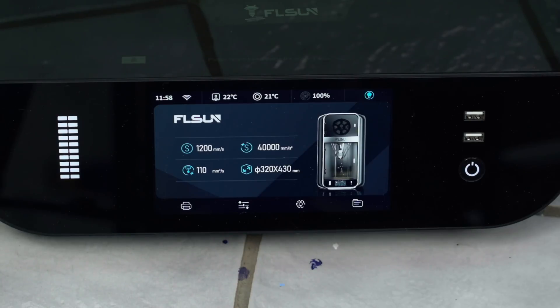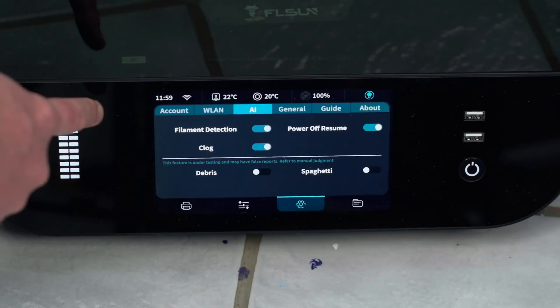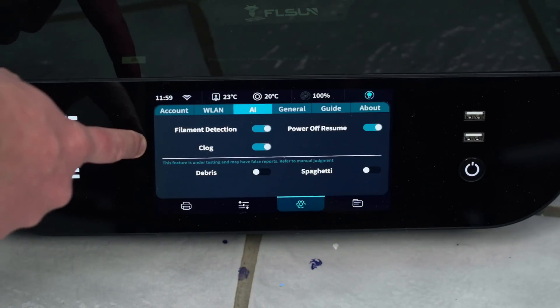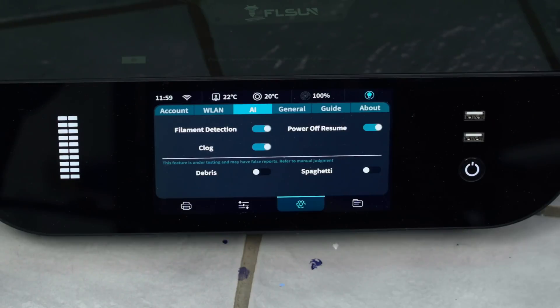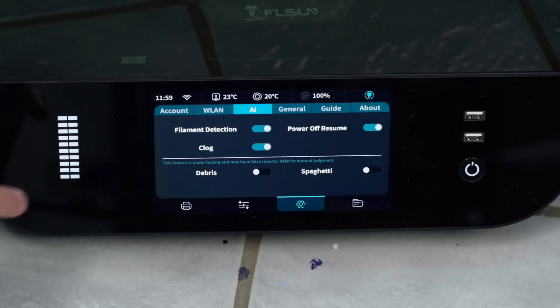Since this is a printer in 2025, of course it's going to have some AI features. The normal detection features are above this line. Filament detection, that's just your run out detection. Power off resume, that way it'll resume it if there's a power loss. I do like the clog feature, so if the filament isn't moving forward for any reason while it's printing, it'll let you know and stop the print. Everything below this line is the more experimental. Debris will let you know if there's objects on the printer that shouldn't be there, and spaghetti detection lets you know if the printer is printing some spaghetti. These were a little bit more finicky and didn't work reliably in my testing. I found it was easier to just leave them off.